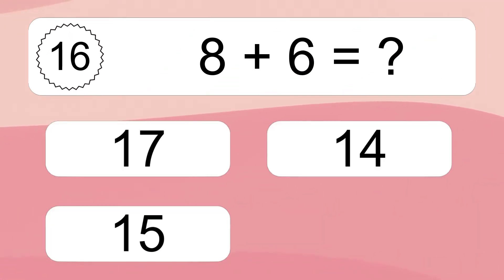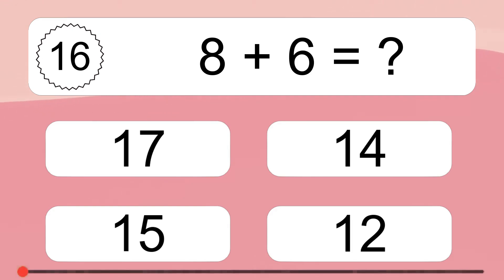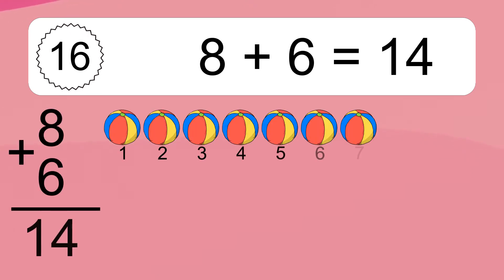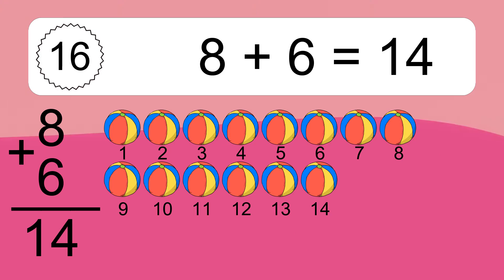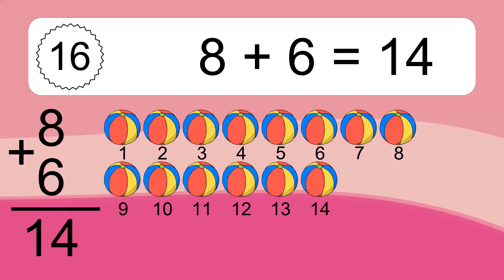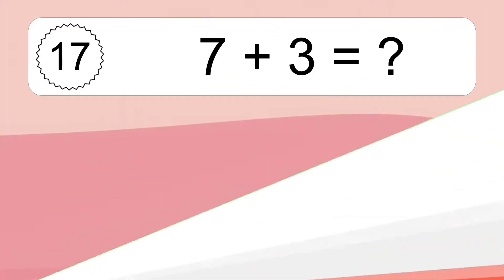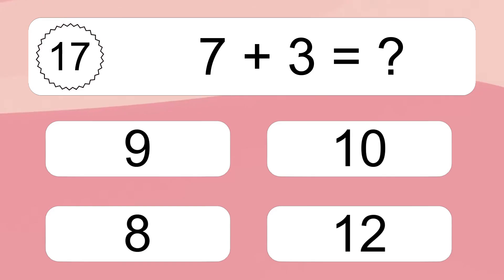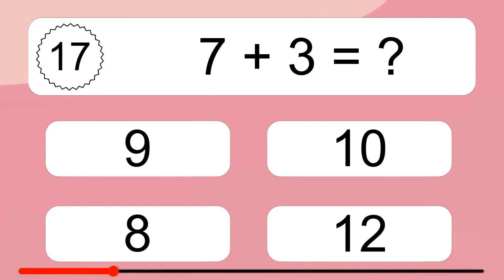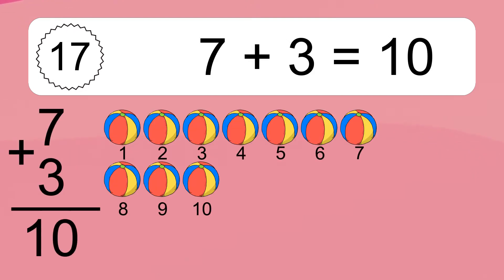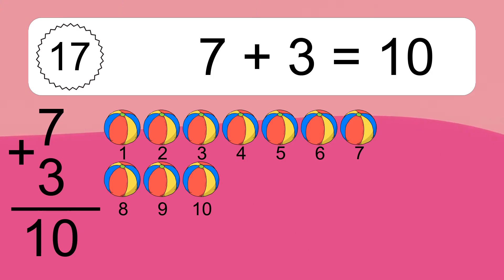8 plus 6 equals what? 8 plus 6 equals 14. Let's count it. 1, 2, 3, 4, 5, 6, 7, 8, 9, 10, 11, 12, 13, 14. 7 plus 3 equals what? 7 plus 3 equals 10. Let's count it. 1, 2, 3, 4, 5, 6, 7, 8, 9, 10.